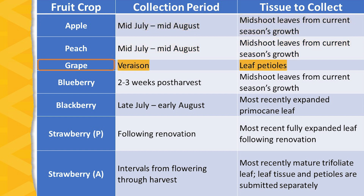With grapes, veraison is the common time that tests are collected and leaf petioles are the tissue of interest. Occasionally, tests are also run from samples collected earlier in the growing season, again of leaf petioles.